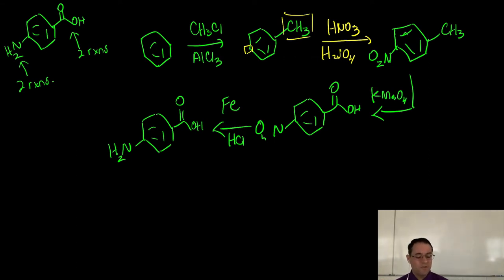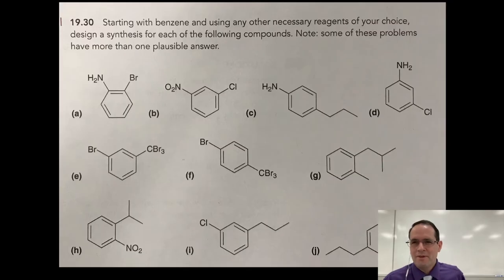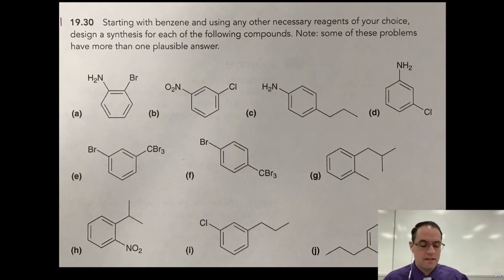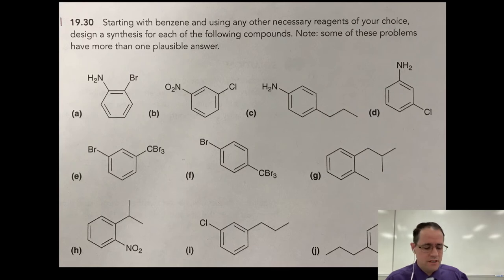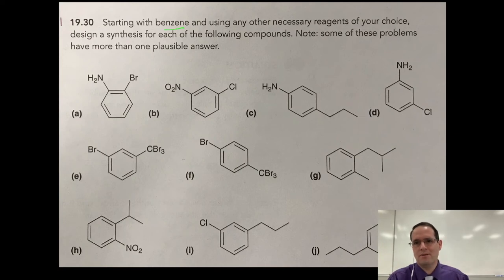I've illustrated three examples so far, but now let's go over problem 1930 from the textbook. Most of the molecules are di-substituted, and some require tricks to get them to work. We're starting with benzene and need to make sure directing groups are correct. Let's do part A: synthesize ortho-bromoaniline. The NH2 is an ortho-para director and the bromine is ortho to that — the bromine is also an ortho-para director and the NH2 is ortho to that. So there's no wrong way to start this.